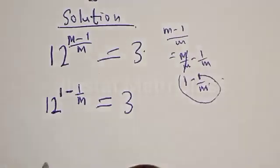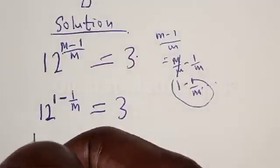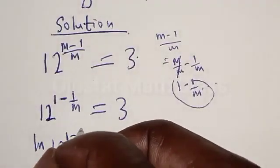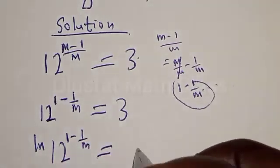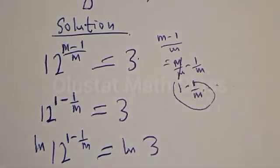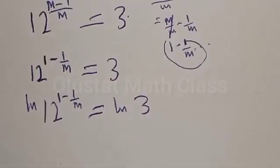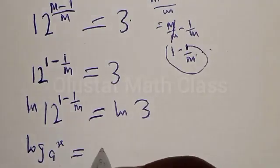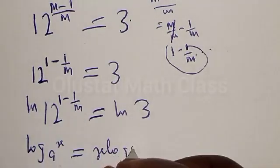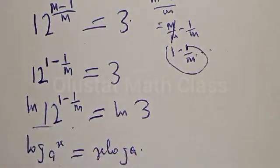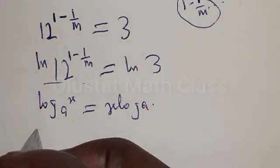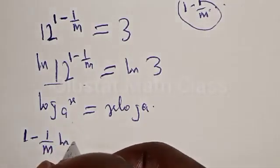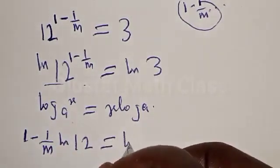Then let's take the log of both sides. We have natural log of 12 raised to power 1 minus 1 over m equal to natural log of 3. Now, if you have log a raised to power s, it can also be written as s log a. Therefore, the whole of this will become 1 minus 1 over m, natural log of 12, equal to natural log of 3.